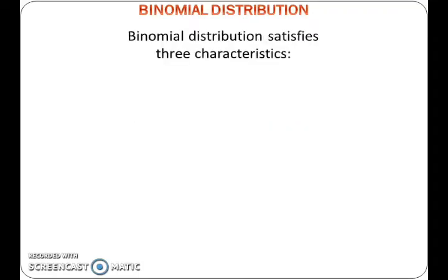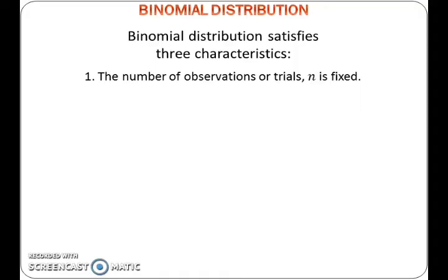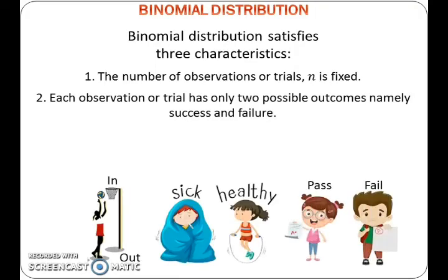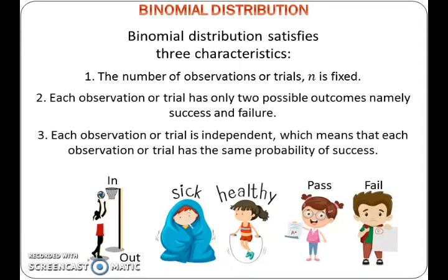Binomial distribution satisfies three characteristics. Number one, the number of observations or trials is fixed. Number two, each observation or trial has only two possible outcomes, namely success and failure. And number three, each observation or trial is independent, which means that each observation or trial has the same probability of success.